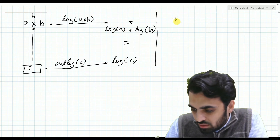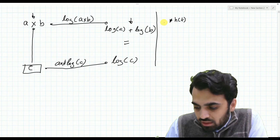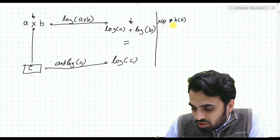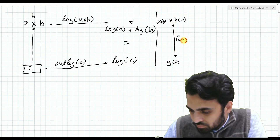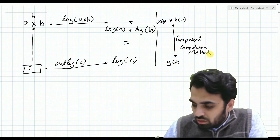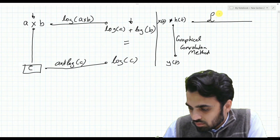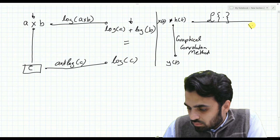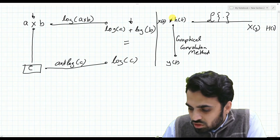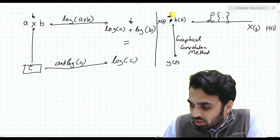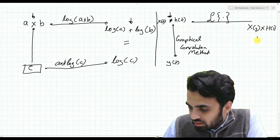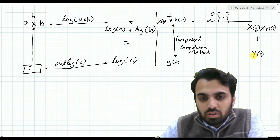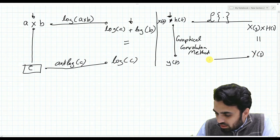With an impulse response h(t), if we convolve h(t) with an input x(t), we can use a graphical convolution method to achieve y(t). Alternatively, we can take the Laplace transform, resulting in X(s) and H(s). In the s-domain, the convolution operator — which was difficult — changes into multiplication, giving us Y(s). From Y(s) we then take the inverse Laplace transform to find y(t).